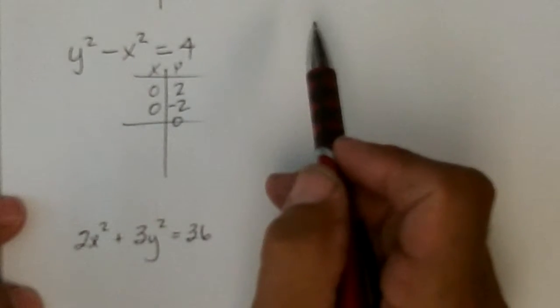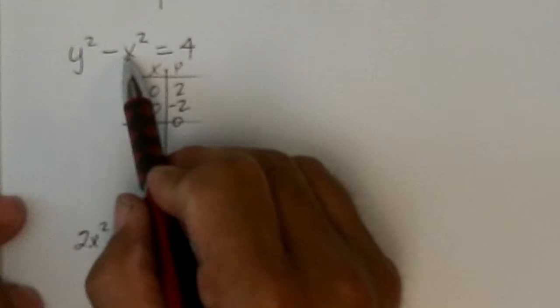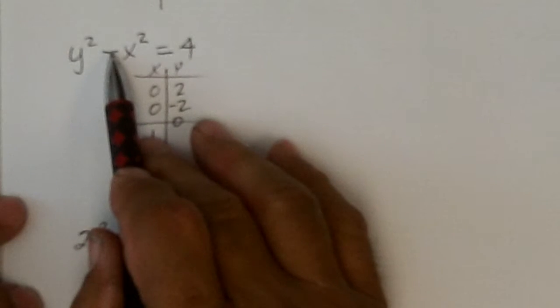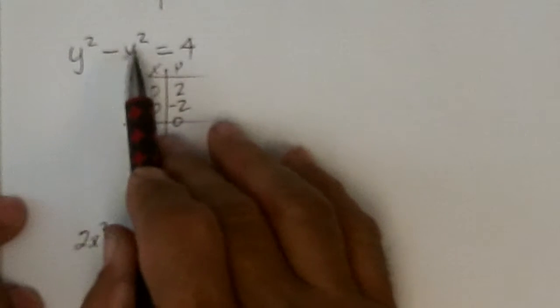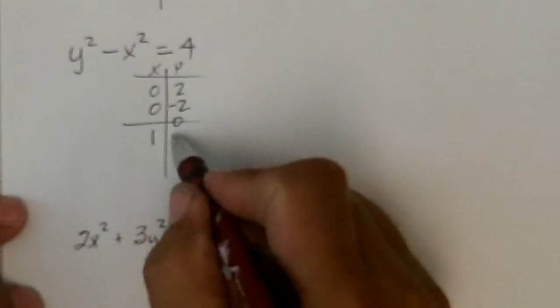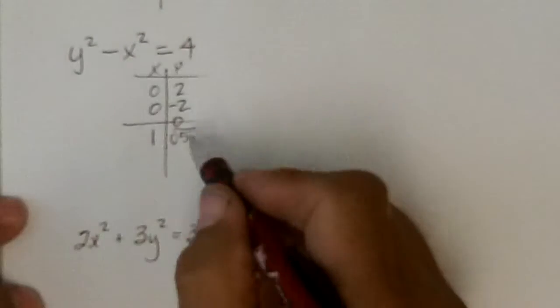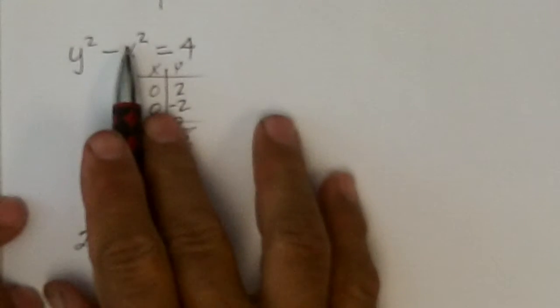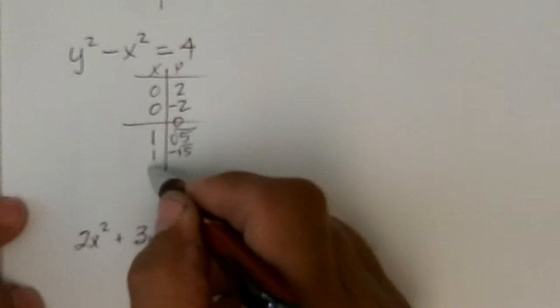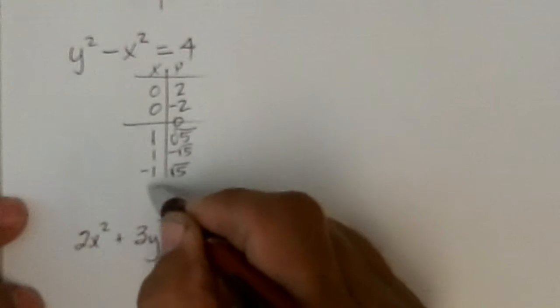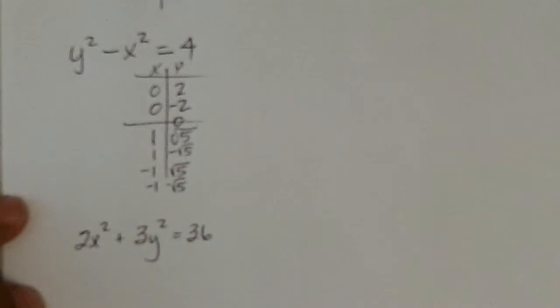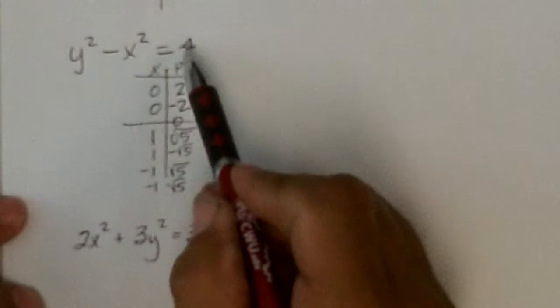Okay. So, now let's put in some other points. Let's put in 1 for x. 1 squared is 1, and that would be minus 1. So, I add 1 over there. So, y squared is 5. So, it would be the square root of 5, but it could also be the negative square root of 5. But you notice that if I put in 1, it's the same thing as if I put in negative 1.